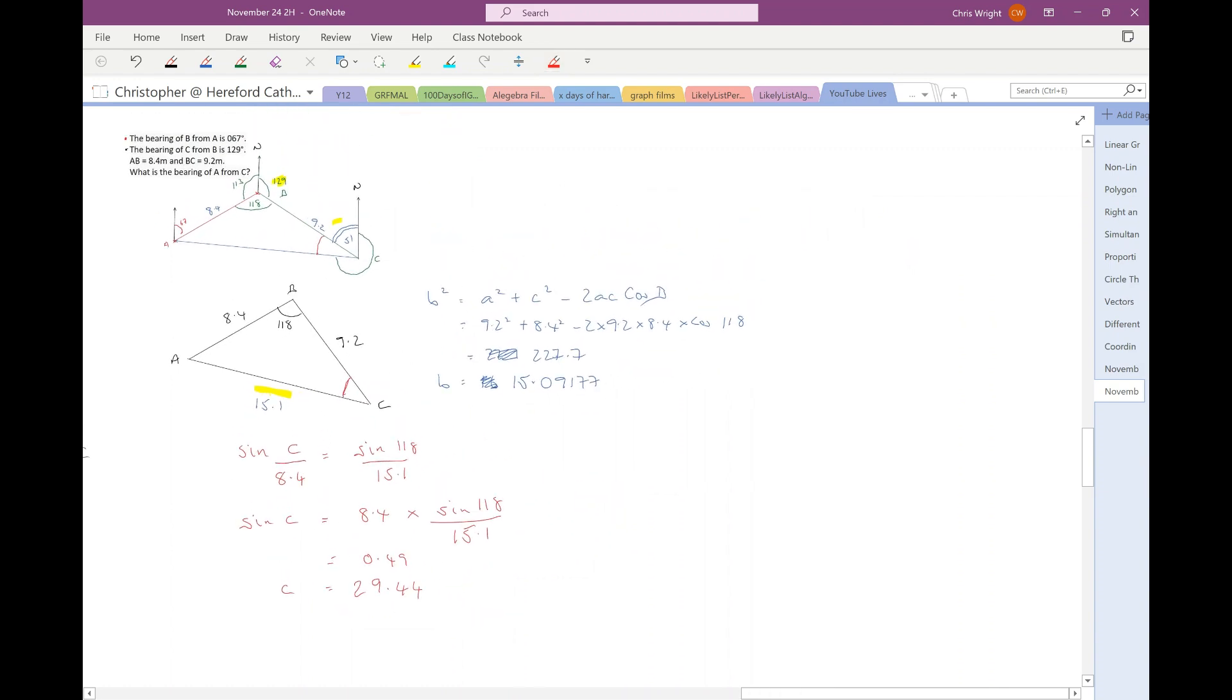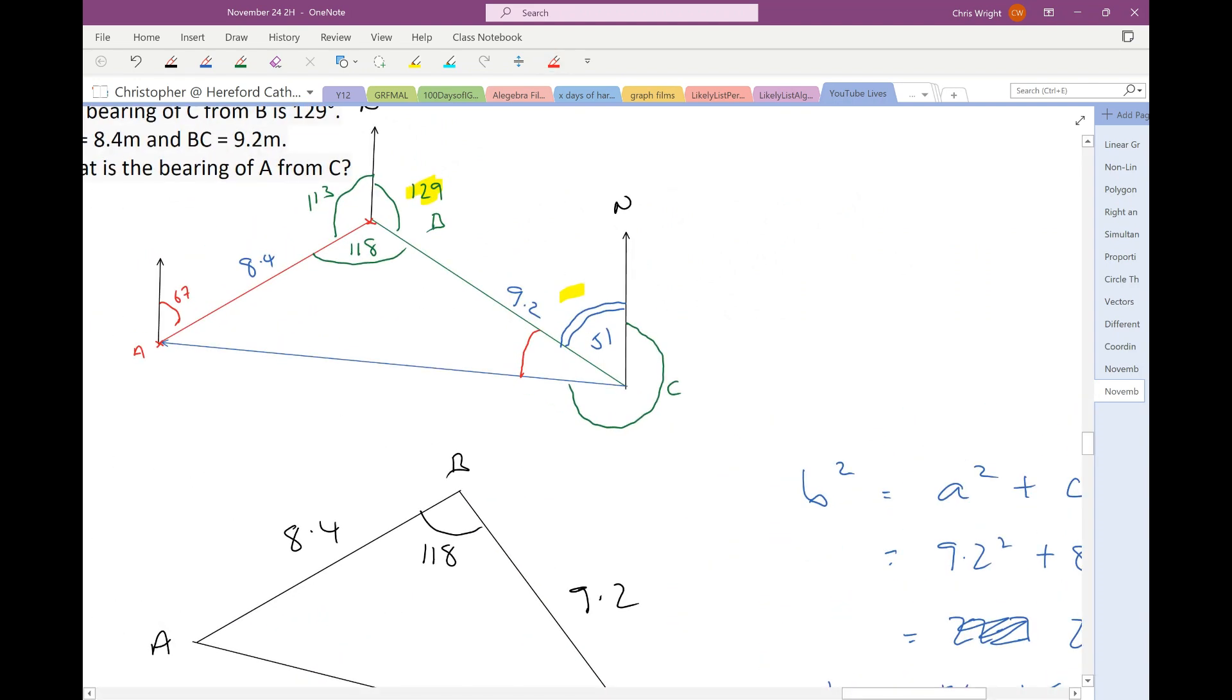I'm in a position to find the bearing, because if I look back at this diagram, this red angle here is 29.4, which means that the bearing will be, that's this angle here, measured from the north, will be 360 minus my angle, which I've just found, minus 51.